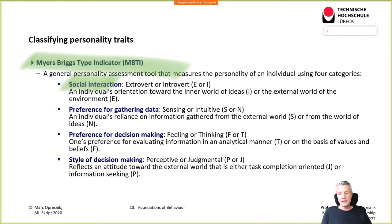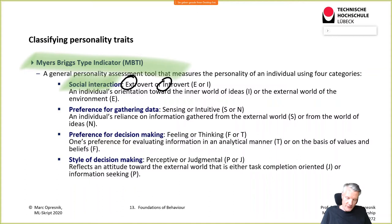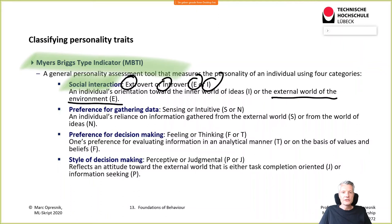I would encourage you to take the test yourself — you can do it for free online. The first question is: do you consider yourself more extrovert or introvert? If you're more extrovert, you get an E; if you're more introvert, you get an I. This reflects the individual's orientation toward the inner world of ideas or the external world of the environment.